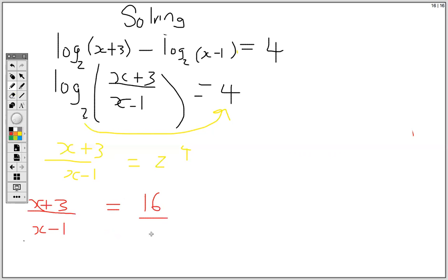Then you put this over 1. So we have (x+3) times 1, that's x+3, and (x-1) times 16. So I'm just going to write this as 16 times (x-1).